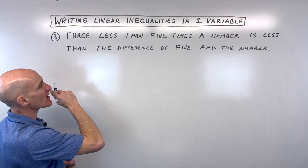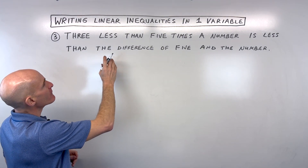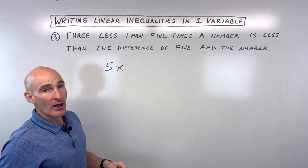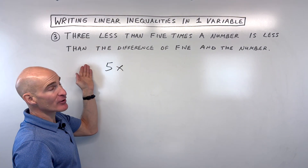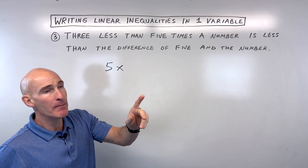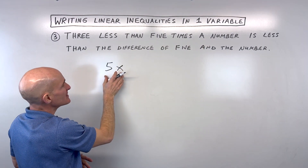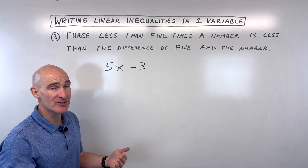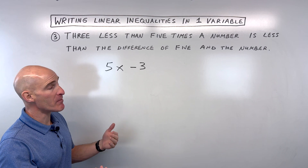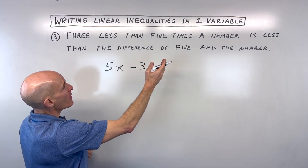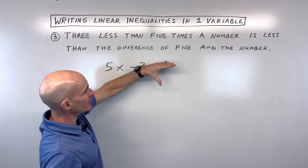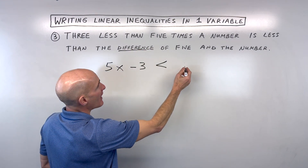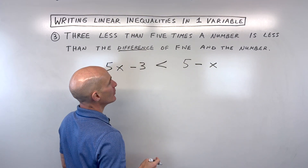Three less than five times a number — I take it in chunks. Five times a number is 5x. Now 'three less than that' — a lot of students translate word by word and write 3 − 5x, but three less than five times a number means we take that quantity and subtract three from it: 5x − 3. It's like being three years younger than your brother — you take their age minus three. Now that quantity is less than the difference of five and the number, which means 5 − x.